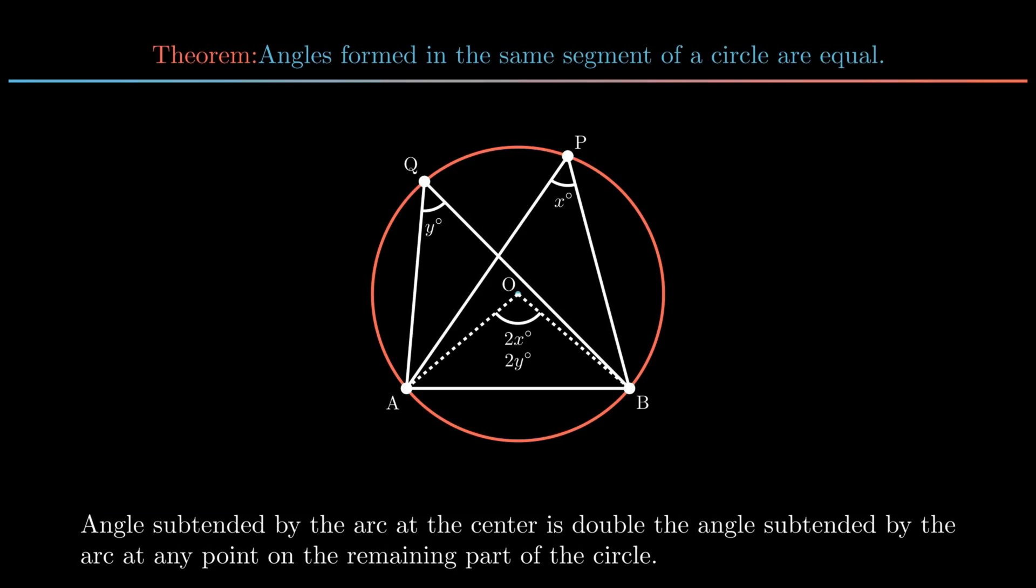So 2 times angle x is equal to 2 times angle y. By cancellation law, angle x is equal to angle y. Hence the theorem is proved.